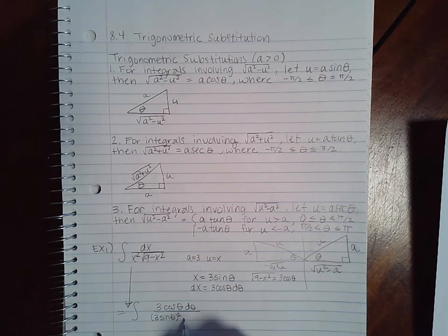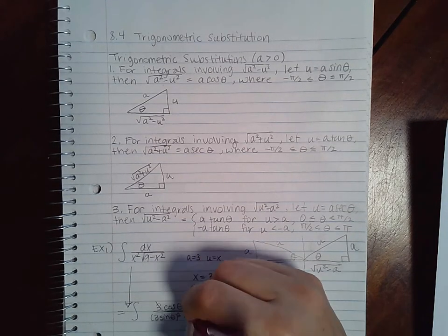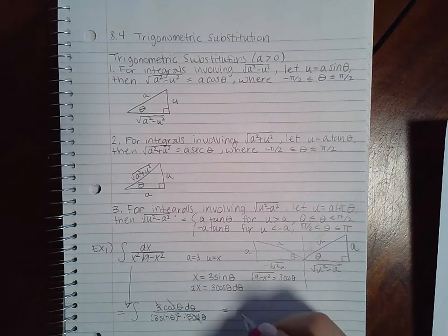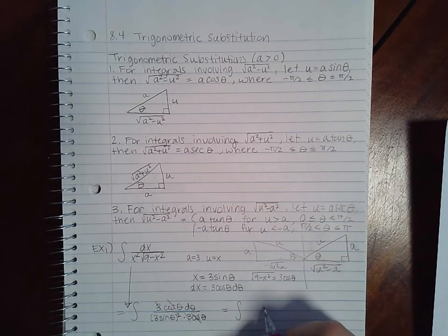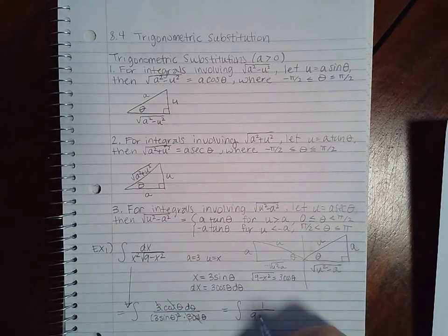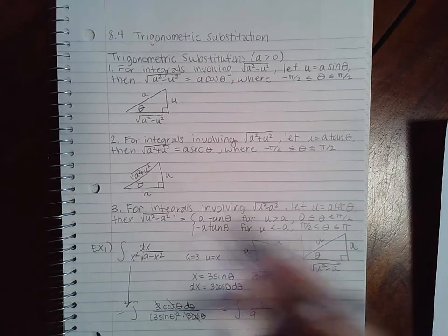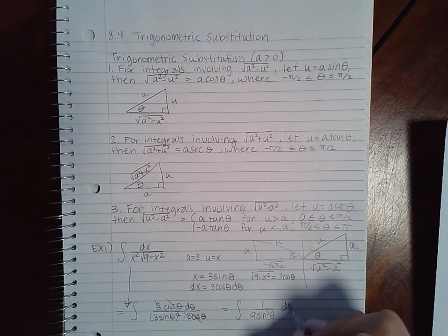Now I'm going to substitute each one of these pieces in, so this is going to become 3 cosine theta d theta over 3 sine theta squared times 3 cosine theta. The threes will reduce, the cosine thetas will reduce, and I'll end up with one over nine sine squared theta, d theta.